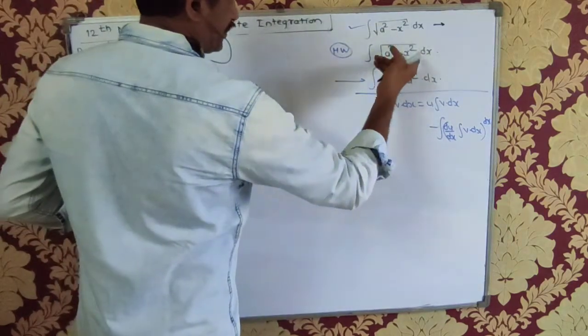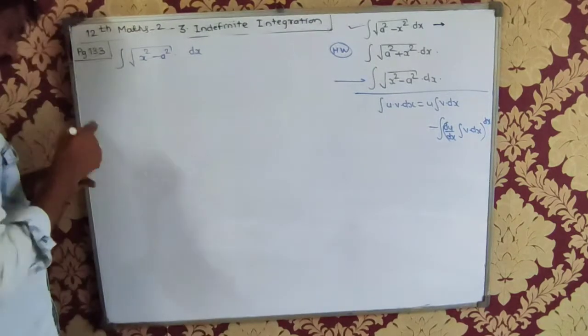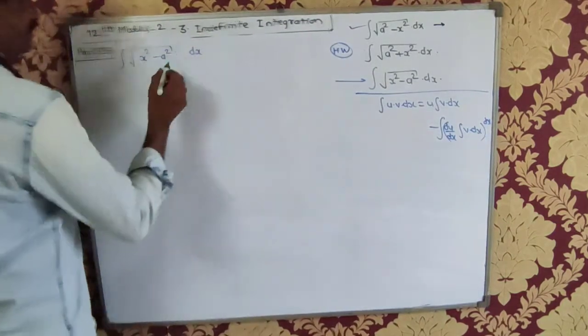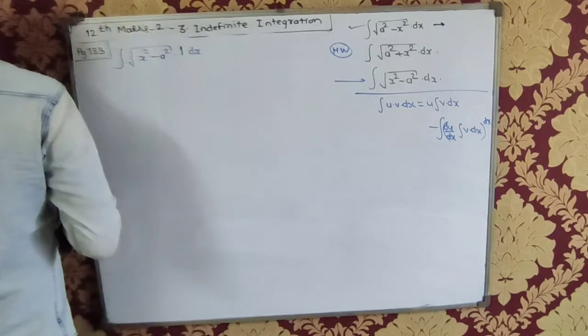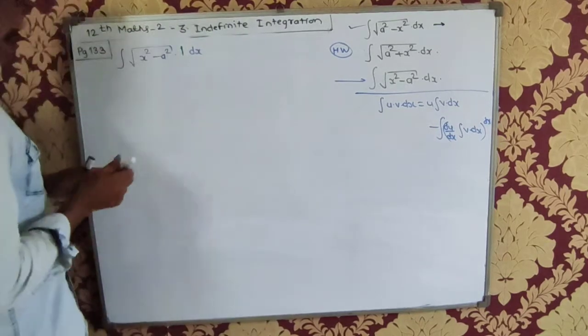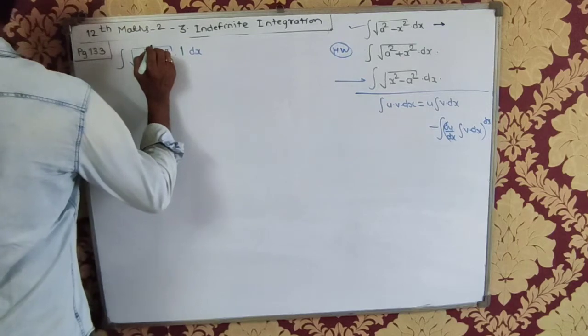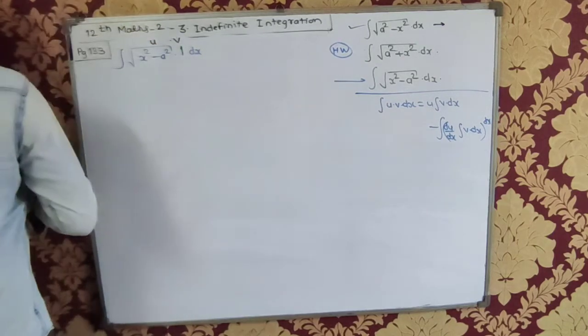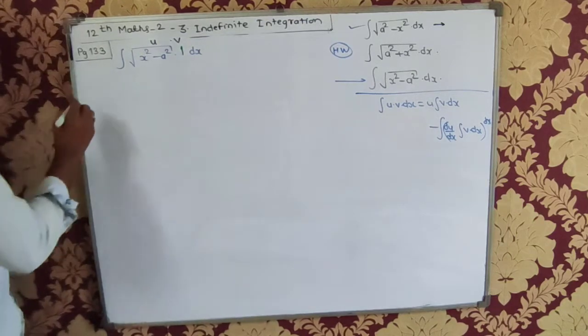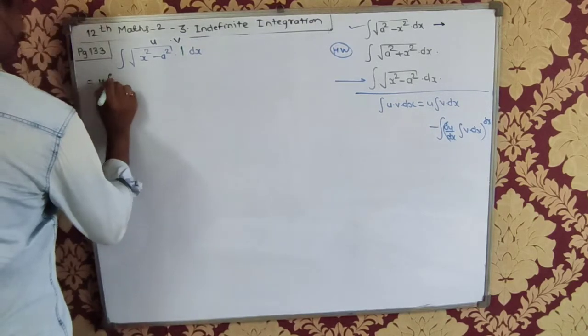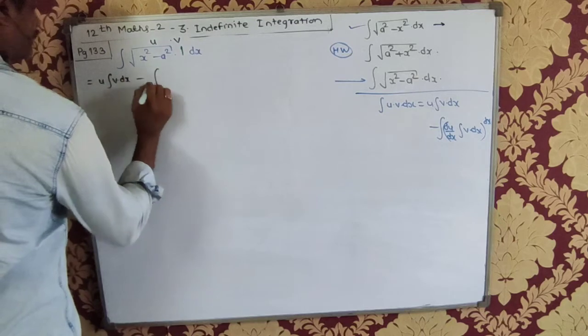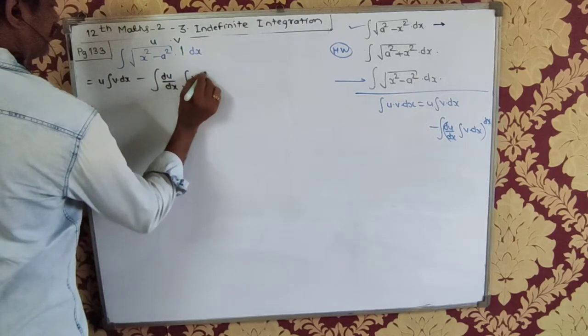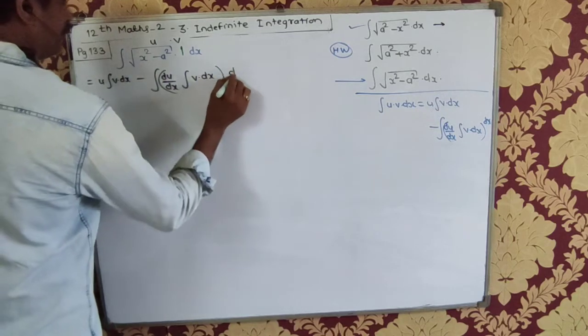This was √(x² - a²). Now let's say that the second function is 1. And this is u and this is v. So let us write down the formula: u ∫v dx minus ∫(du/dx)(∫v dx)dx.